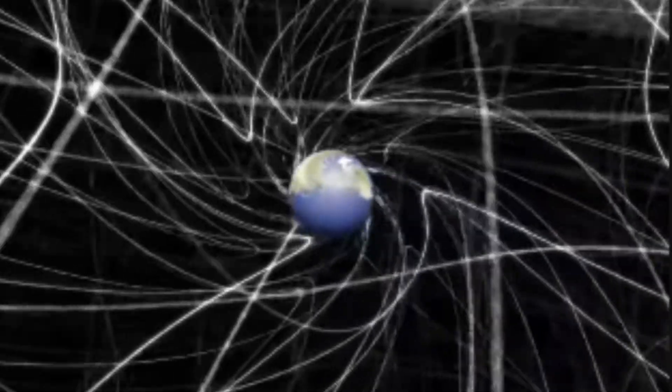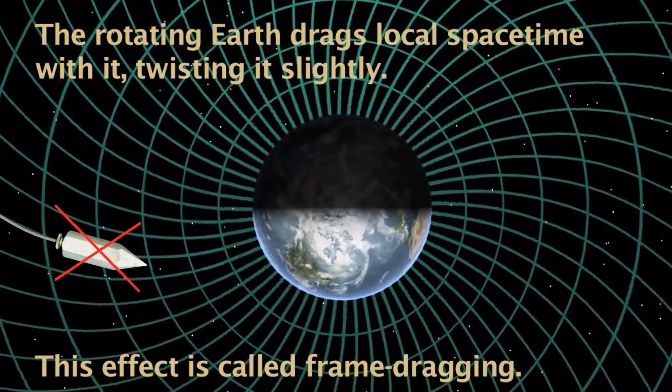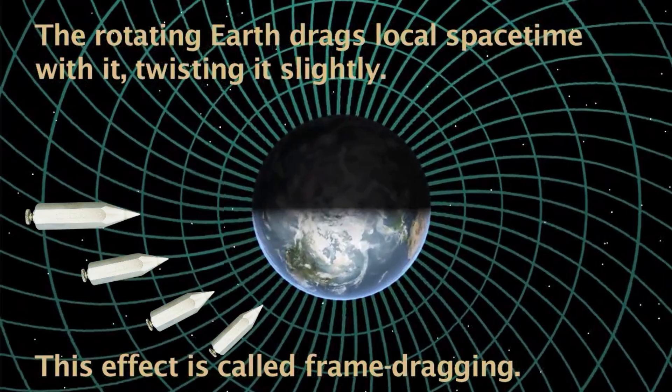Consequently, a stationary plumb bob suspended over the rotating Earth will hang vertically and will not lean to one side. But if it starts to fall, induction will push it in the spinward direction.